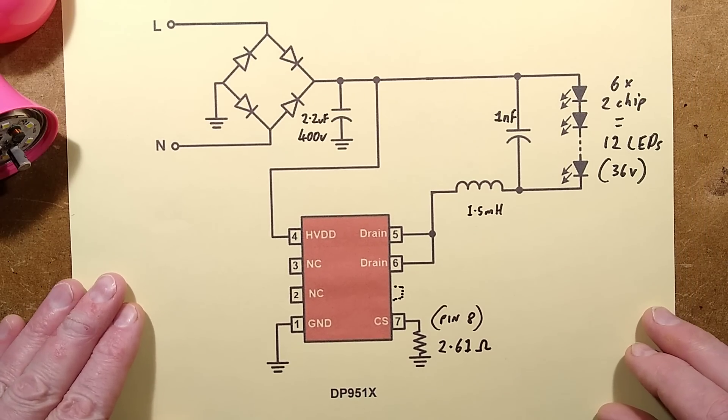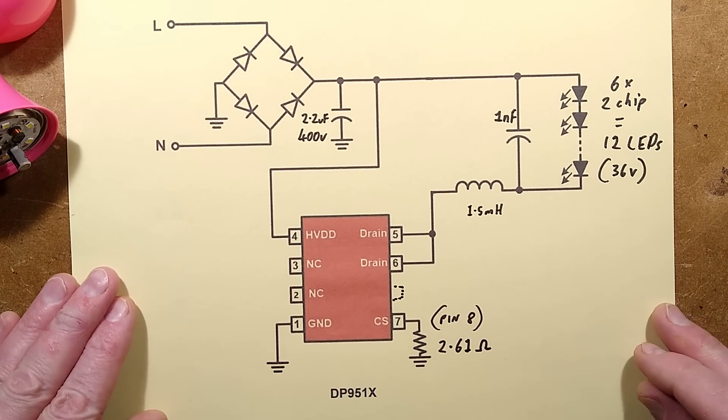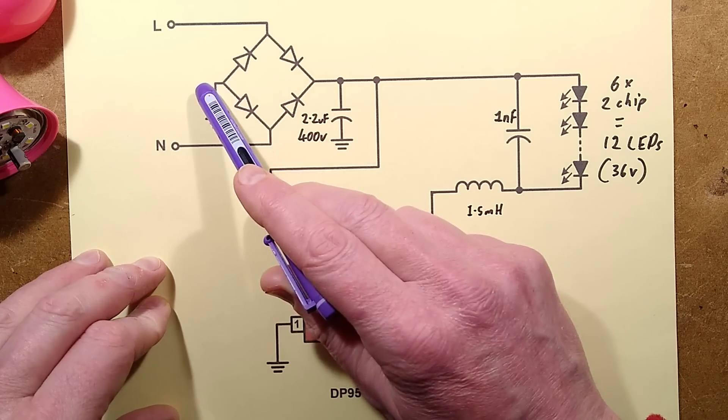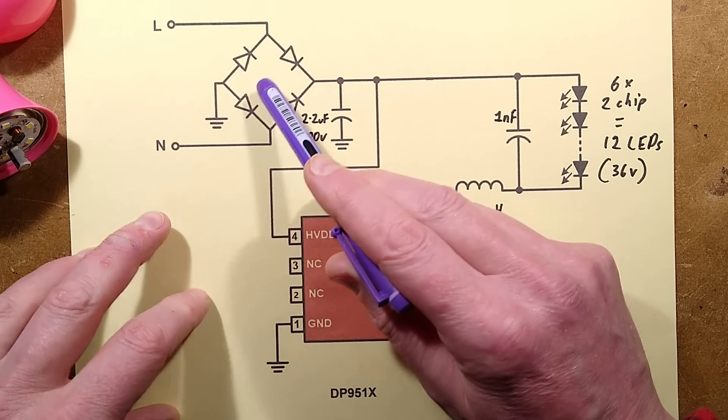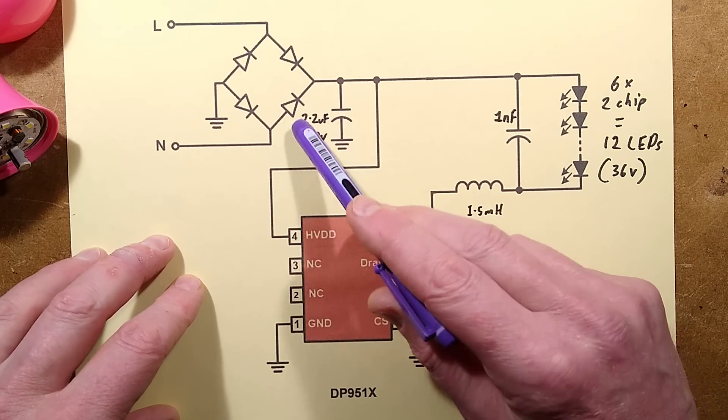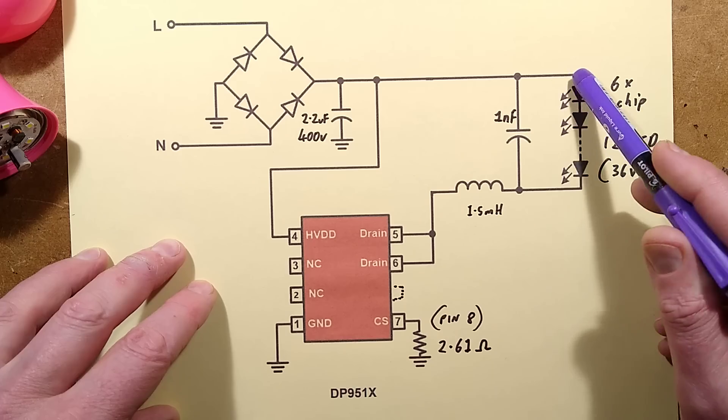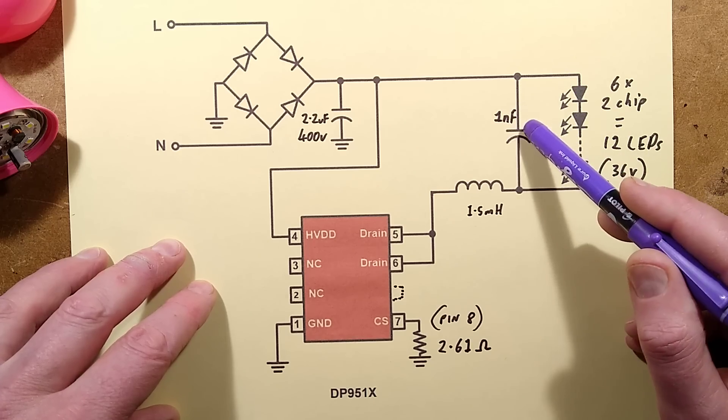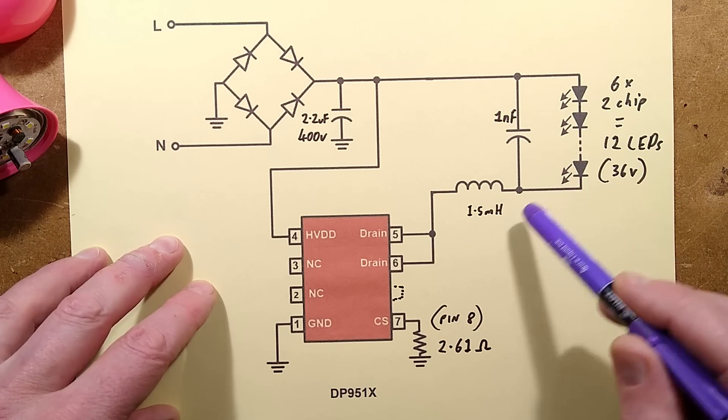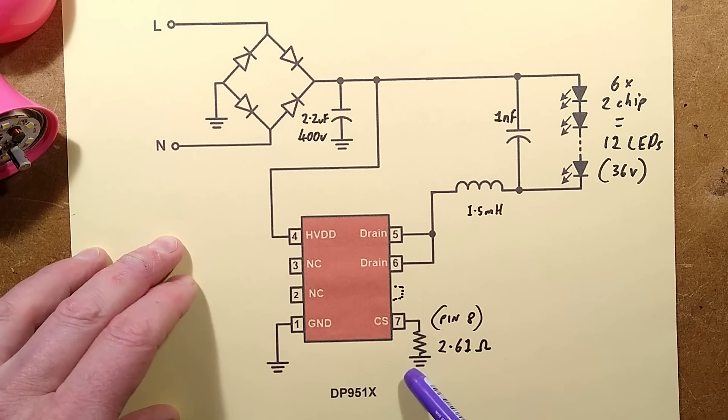Let's take a look at the actual data sheet from the manufacturer which is quite handy. Here is the data sheet. There's the incoming supply, the bridge rectifier, the 2.2 microfarad capacitor going down to the chip, the positive goes out to the LEDs and the one nanofarad capacitor crossing. There's the inductor and there's the sense resistor.